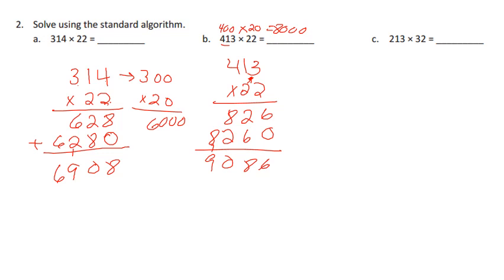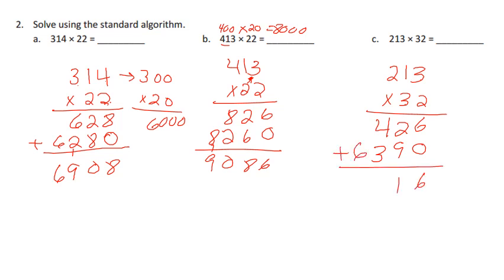Going to c: 213 times 32. Multiplying out, it's 213 times 2: 2 times 3 is 6, 2 times 1 is 2, 2 times 2 is 4. Now we have 30 times 213, so put the place value holder in there. 3 times 3 is 9, 3 times 1 is 3, and 3 times 2 is 6. Add up our partial products: we have 6, 11, 7, and 1 is 8, 6816.